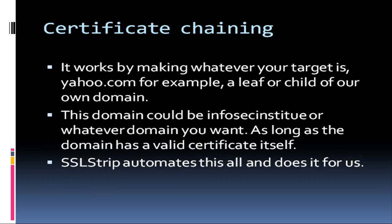Let's look at how this works. The process of certificate chaining works by making your target — for example, yahoo.com — a leaf or child of our own domain. So we could take infosecinstitute.com and append yahoo.com to it: yahoo.com.infosecinstitute.com. Essentially, that's a valid certificate if our own InfoSec Institute certificate is valid or issued from a trusted authority. SSL strip automates all this for you — this is not something you need to understand to make the tool work, but I want you to understand what's going on behind the scenes so when it doesn't work, you know where to start troubleshooting.